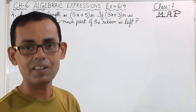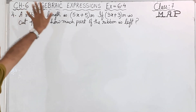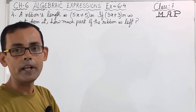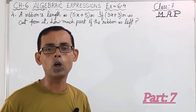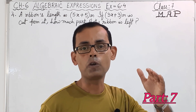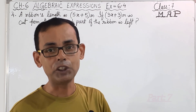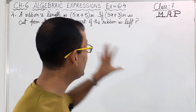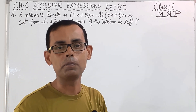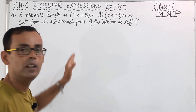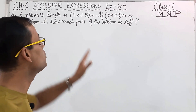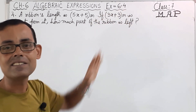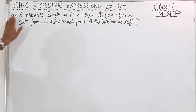Now today, Class 7 students, we are again going to continue with Chapter 6 and we are going to continue with Algebraic Expressions. Today's part is Part 7. Those who have not watched the previous parts, that is from Part 1 to Part 6, I have shared the link at the end of the video. So do watch those parts and then watch this part. And today we are going to continue with Exercise 6.4, and today's sum is Question No. 4.